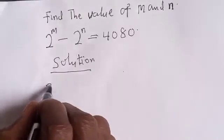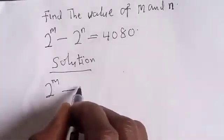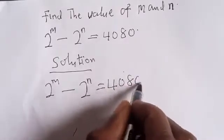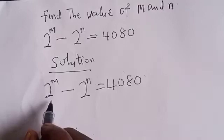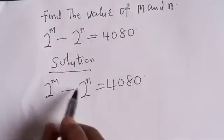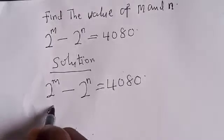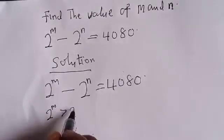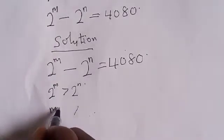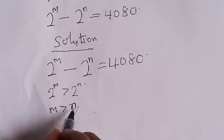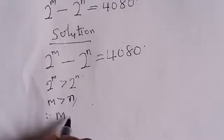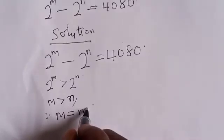We have 2 raised to power m minus 2 raised to power n is equal to 4080. We are looking for the integer values of m and n. Since we have 2 raised to power m and 2 raised to power n, this implies that 2 raised to power m is greater than 2 raised to power n, and therefore m is greater than n. So we let m equal to n plus k.